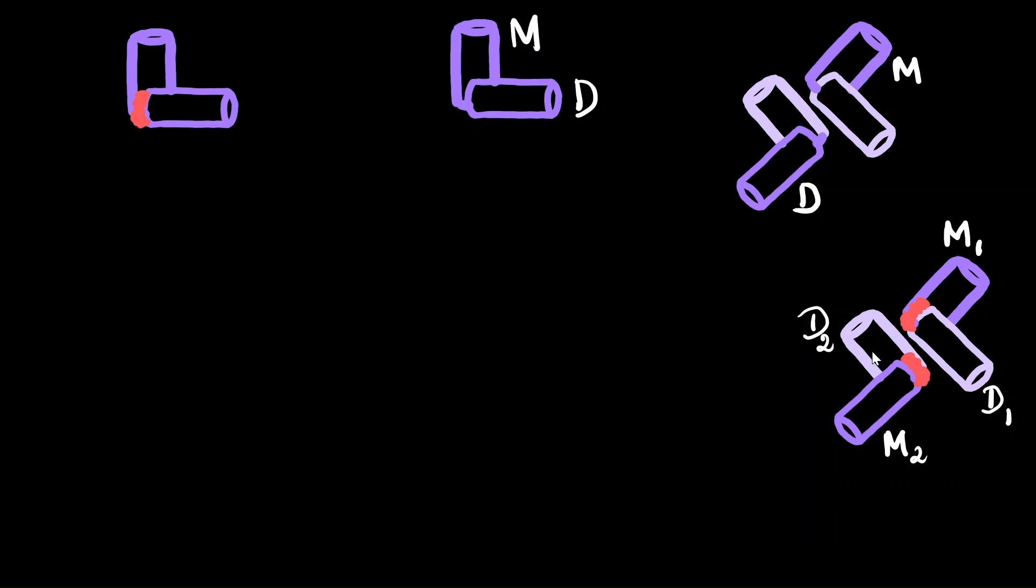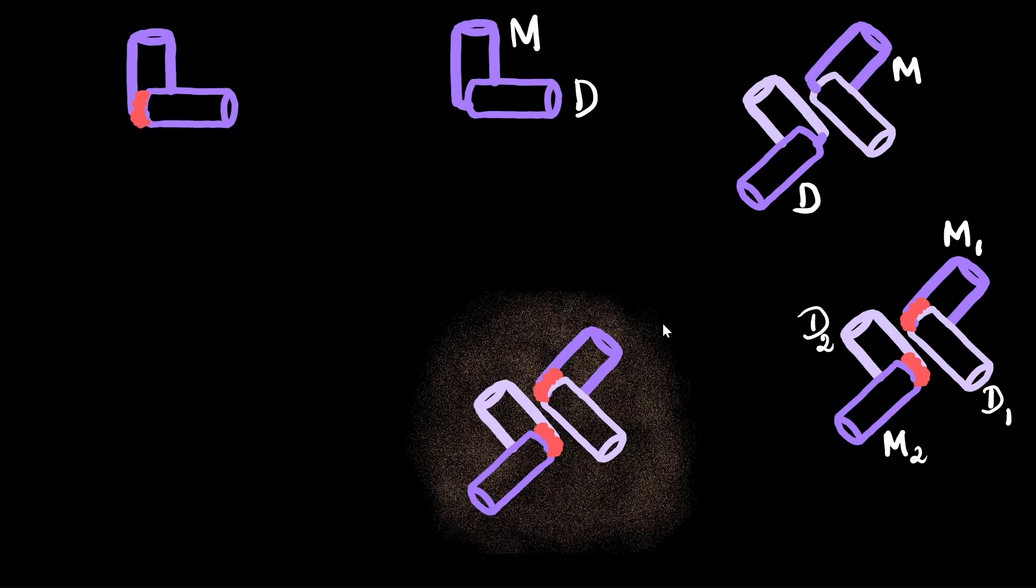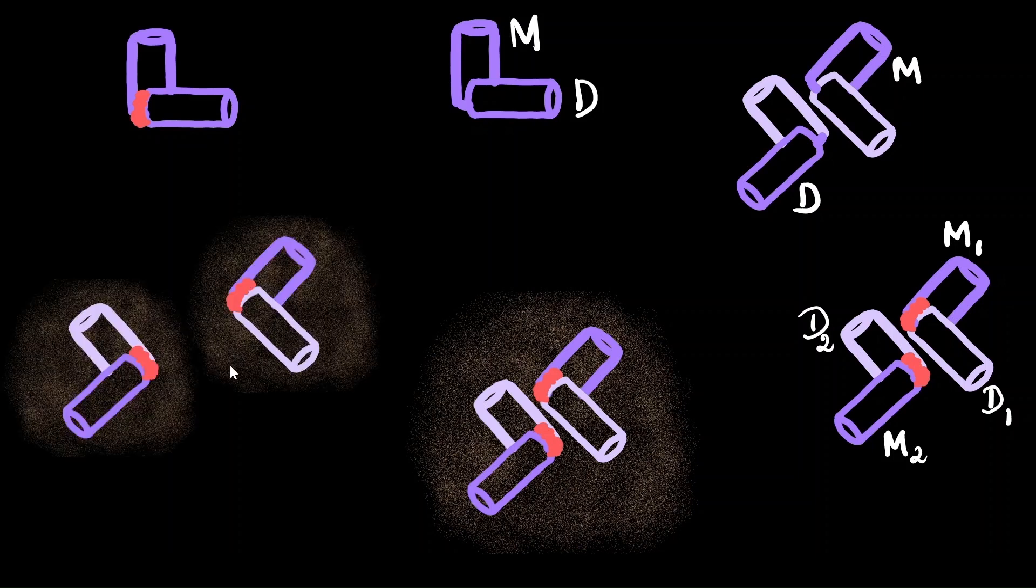After the replication process and the new daughter centrioles have reached maturity, the interconnecting fibers are formed between the mother and daughter centrioles like before. The pair slowly starts acquiring the pericentriolar material between them. At some point, they start separating from each other. They also divide the pericentriolar material between them.